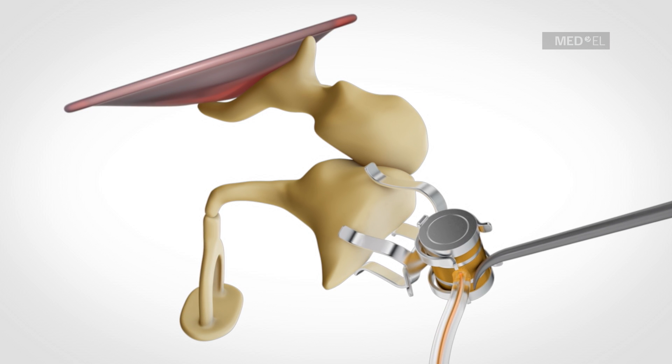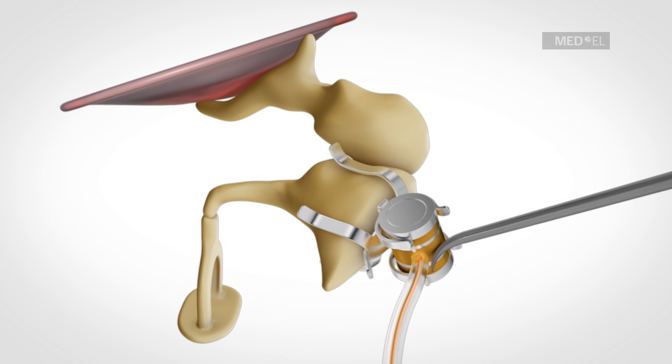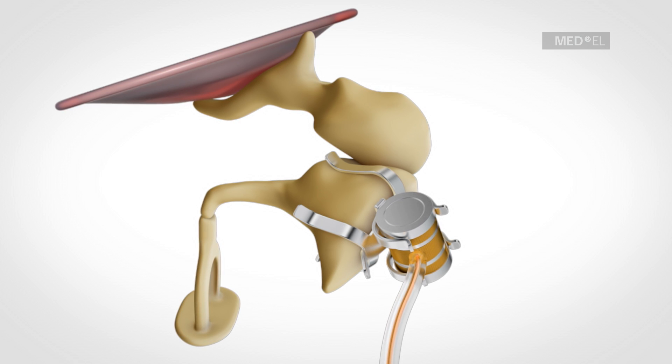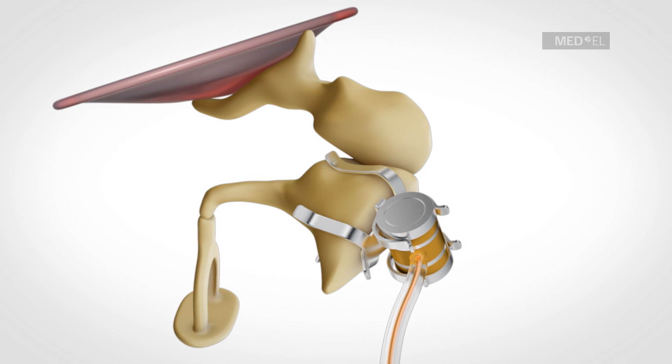The longer legs sit over the body of the INCUS and the shorter legs over the short process of the INCUS. Crimping is not needed and with this coupler there are fewer surgical steps.